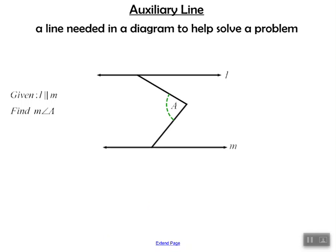Auxiliary lines. An auxiliary line is a line needed in a diagram to help solve a problem. So if you look at the diagram below, we're given the fact that L is parallel to M, and we have to find the measure of angle A.